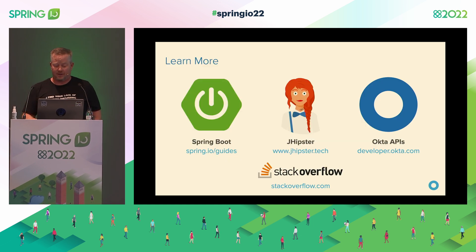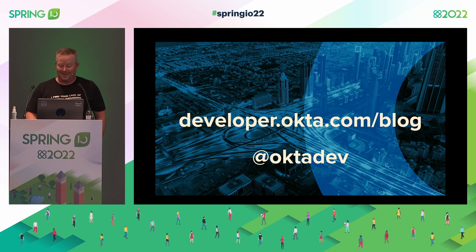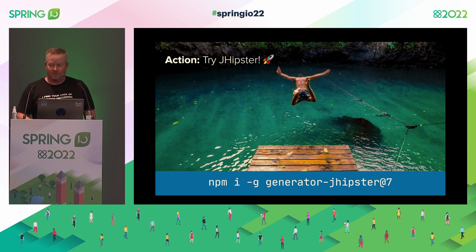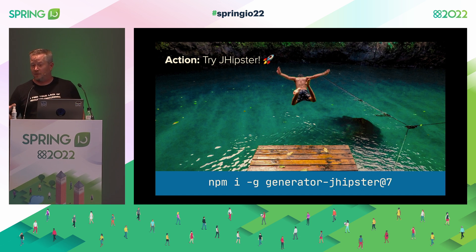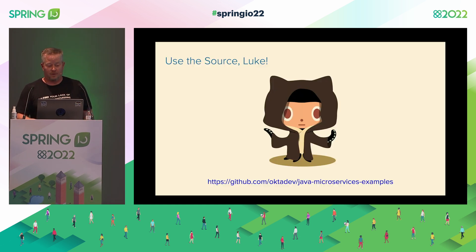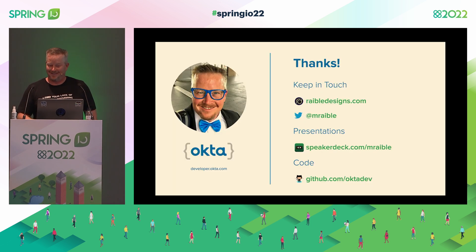You can learn more at Spring Boot's guides, jhipster.tech, and developer.okta.com for Okta's APIs. Stack Overflow is my lead developer — I encourage you to hire them for your team too. Our Twitter and GitHub handle is all at OktaDev. My call to action for you is to try JHipster — NPM install it. I've got stickers up here, and Okta has a coffee booth downstairs with cappuccinos and lattes. Use the source, Luke. May the auth be with you. Thank you for coming.